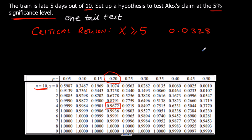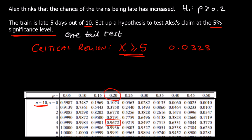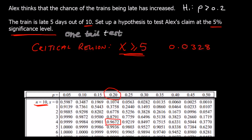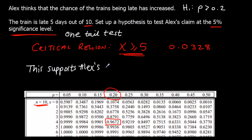So there's our critical region identified. The train was late 5 days out of 10, which falls within the critical region, so that does support the alternative hypothesis. Alex is correct — this supports Alex's claim. We can reject the null hypothesis and accept the alternative hypothesis.